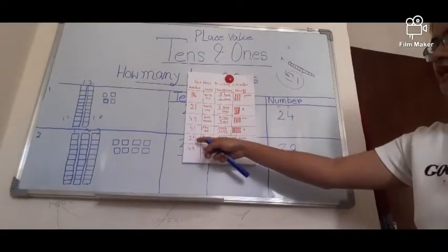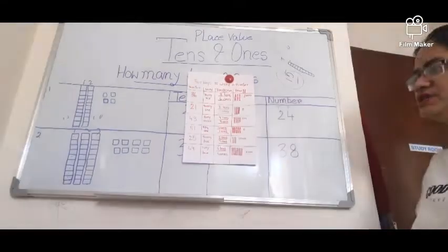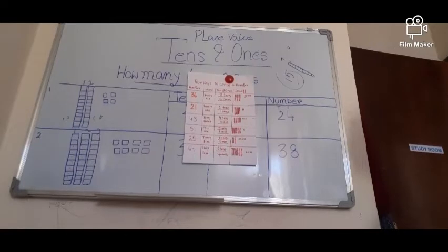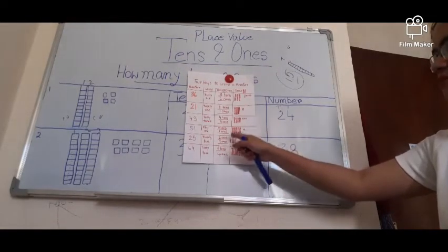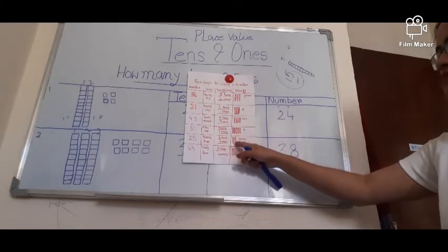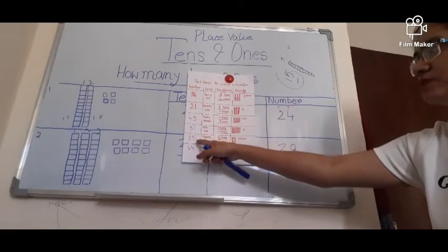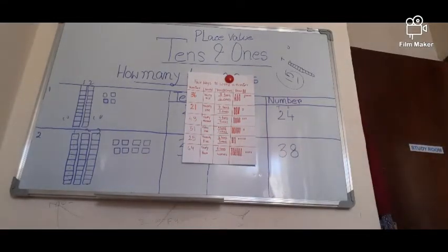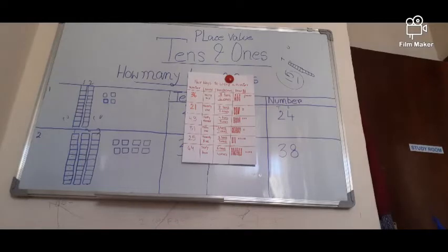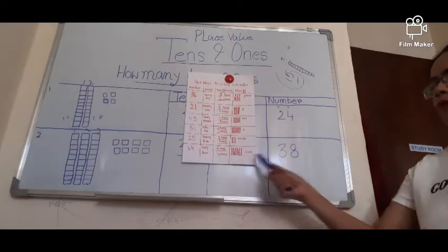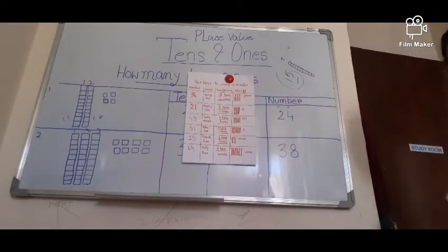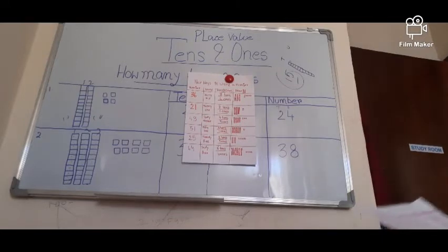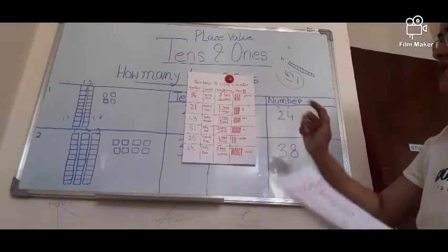Next is 25 — twenty-five. In 10s and 1s: 2 tens and 5 ones. Draw 2 groups of 10 blocks each, and for the 1s place draw 5 separate blocks. Then 64 — sixty-four — 6 tens and 4 ones: draw 6 different groups of 10 blocks and 4 single blocks. This is how we draw the 10s position and 1s place position.